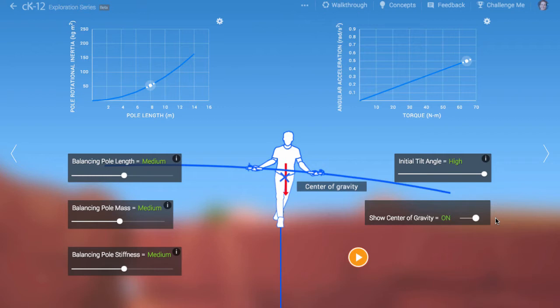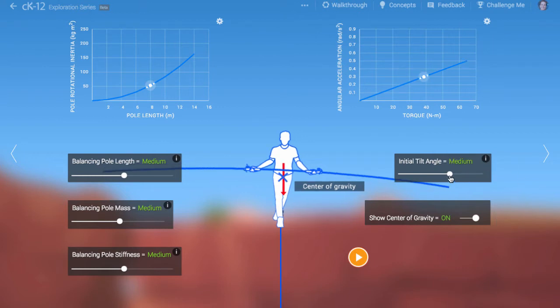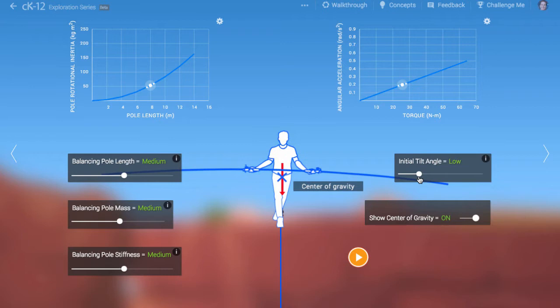There are three ways to decrease his rotational acceleration. One is to decrease the tilt angle. Basically, he shouldn't lean over for any reason.